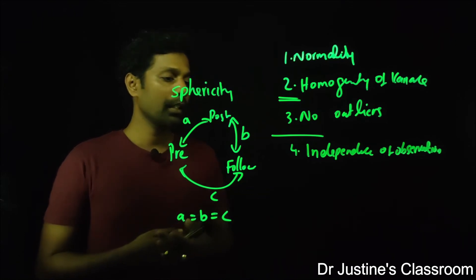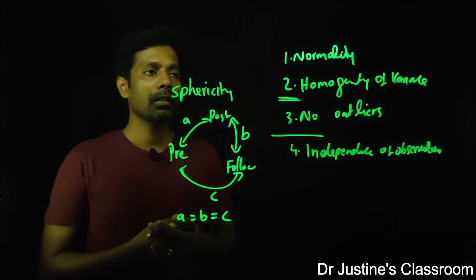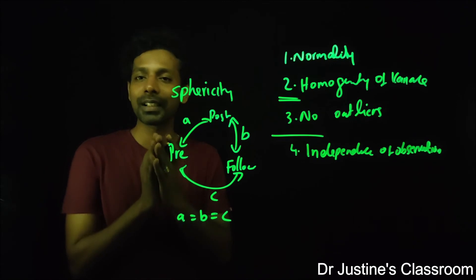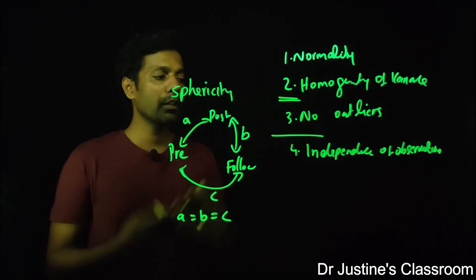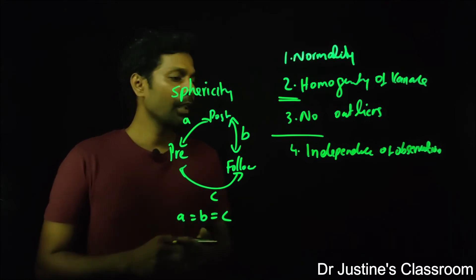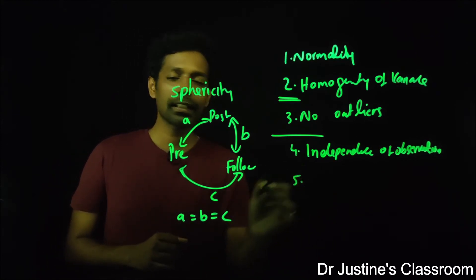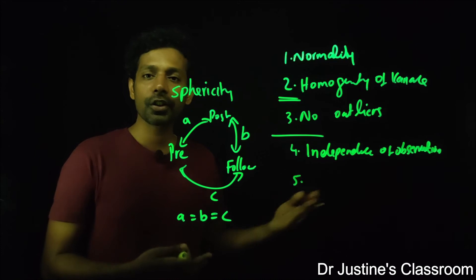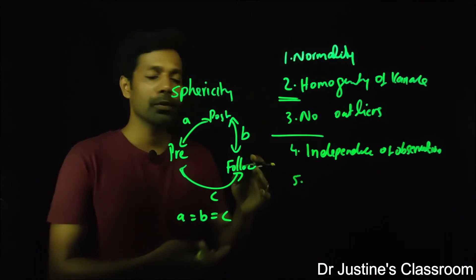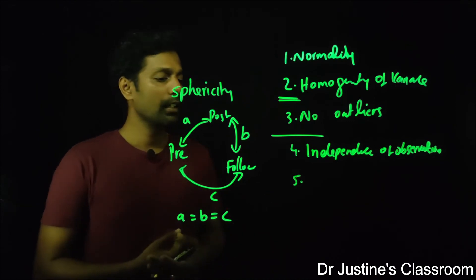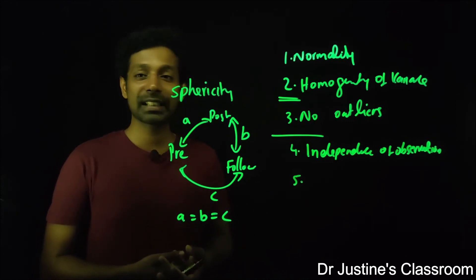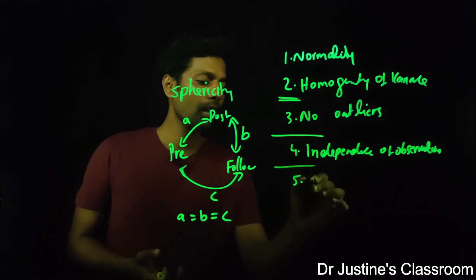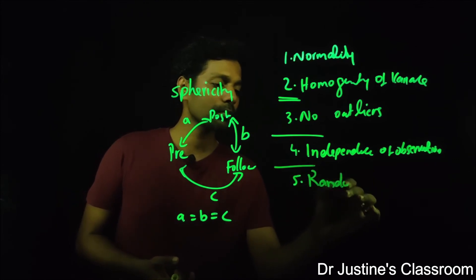In within-group designs, independence between groups may not hold, but data within the sample should still be independent. These are general assumptions — different tests have different variations. For example, regression analysis has additional assumptions like homoscedasticity. Another general assumption is random selection.